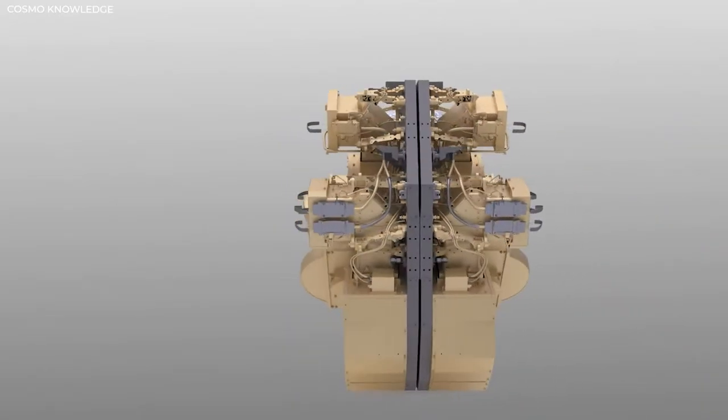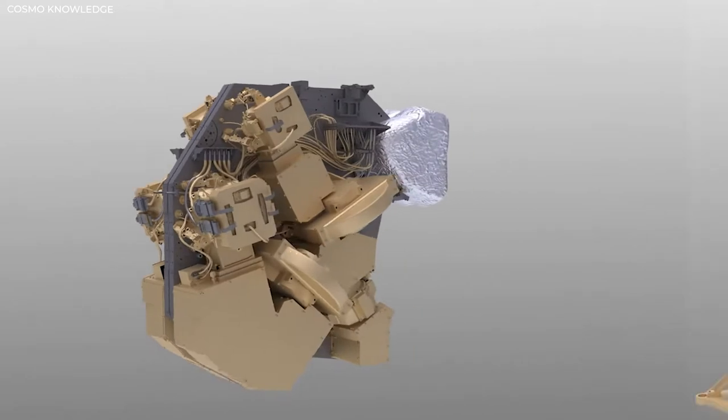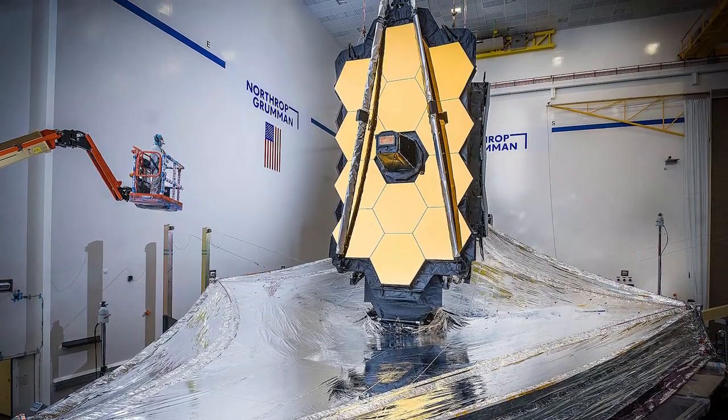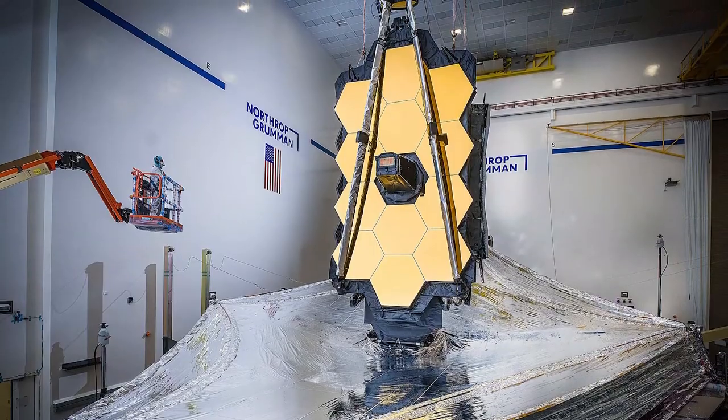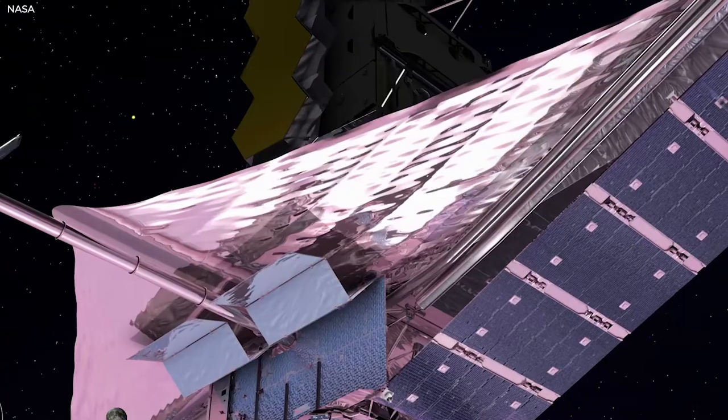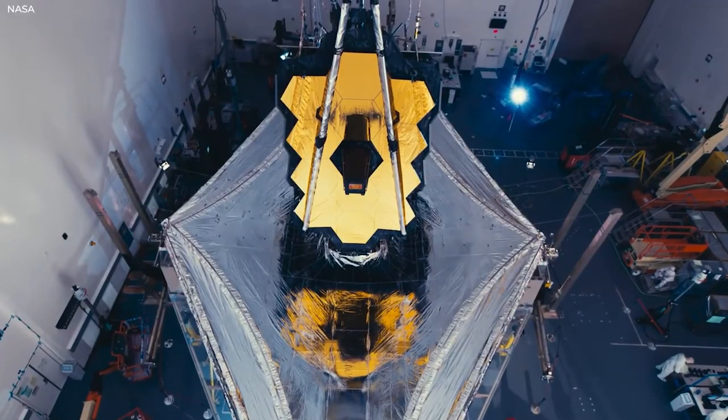Near-infrared spectrograph or NIRSPEC will conduct spectroscopy in the same wavelength range. The NIRSPEC design has three observation modes: a prism-based low-resolution mode, an R-1000 multi-object mode, and an R-2700 integral field unit or long-slit spectroscopy mode.